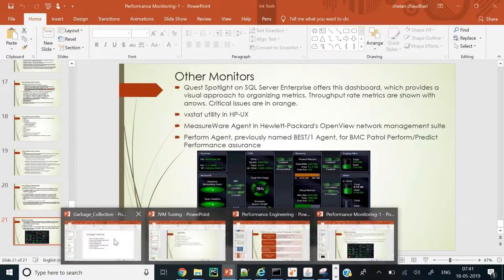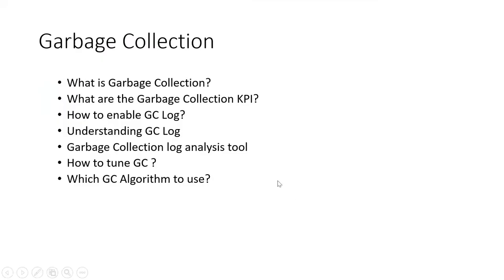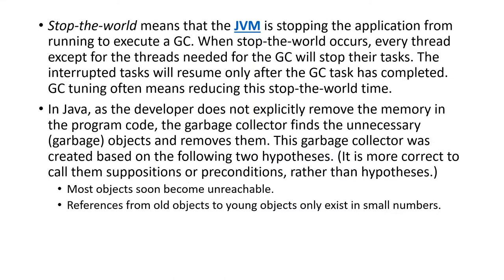In the third session, we discussed Garbage Collection (GC) — the most favorite topic for everyone. What is GC? What are the GC KPIs we should collect? How do we enable GC? How are GC logs written? We also saw the analysis tools. GC is also called the 'stop-the-world' process. We discussed garbage collection in detail — Java is automatic memory management and GC is a part of that automatic memory management. We discussed the structure of your GC and when GC is called, how it affects the memory area.